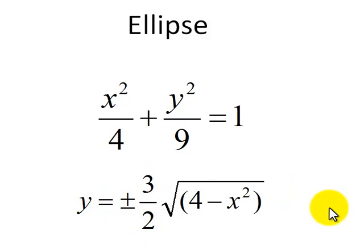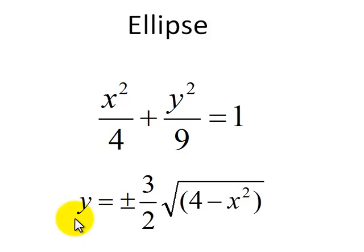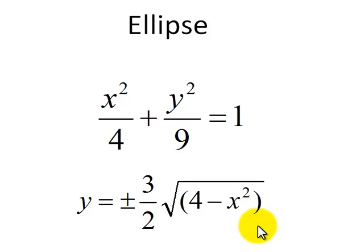Solving for y, the upper half is positive 3 halves times the square root of 4 minus x squared. And y will be negative when it's equal to minus 3 halves times the square root of 4 minus x squared, giving us the curve underneath the x axis.